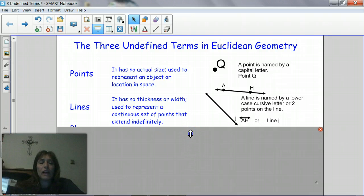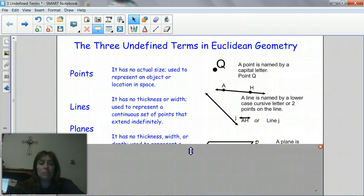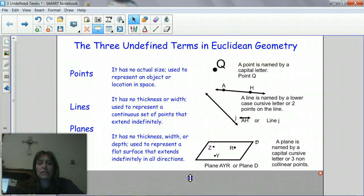The last one is planes. A plane has no thickness, width, or depth. It's used to represent a flat surface that extends indefinitely in all directions.